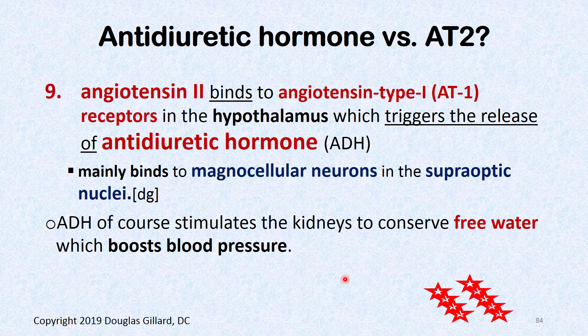Angiotensin II also binds to AT1 receptors in the hypothalamus, triggering the release of antidiuretic hormone — ADH, also known as arginine vasopressin. The main releasers of ADH are magnocellular neurons in the supraoptic and paraventricular nuclei. Angiotensin II binds to those neurons and stimulates them to crank out ADH. ADH conserves free water only — sodium does not follow when ADH is involved. Remember that.